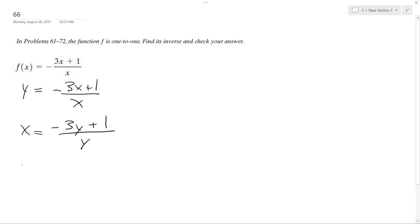So first off, multiply by y, so I get xy is equal to negative 3y plus 1, and we move y over, so I get xy plus 3y equals 1.